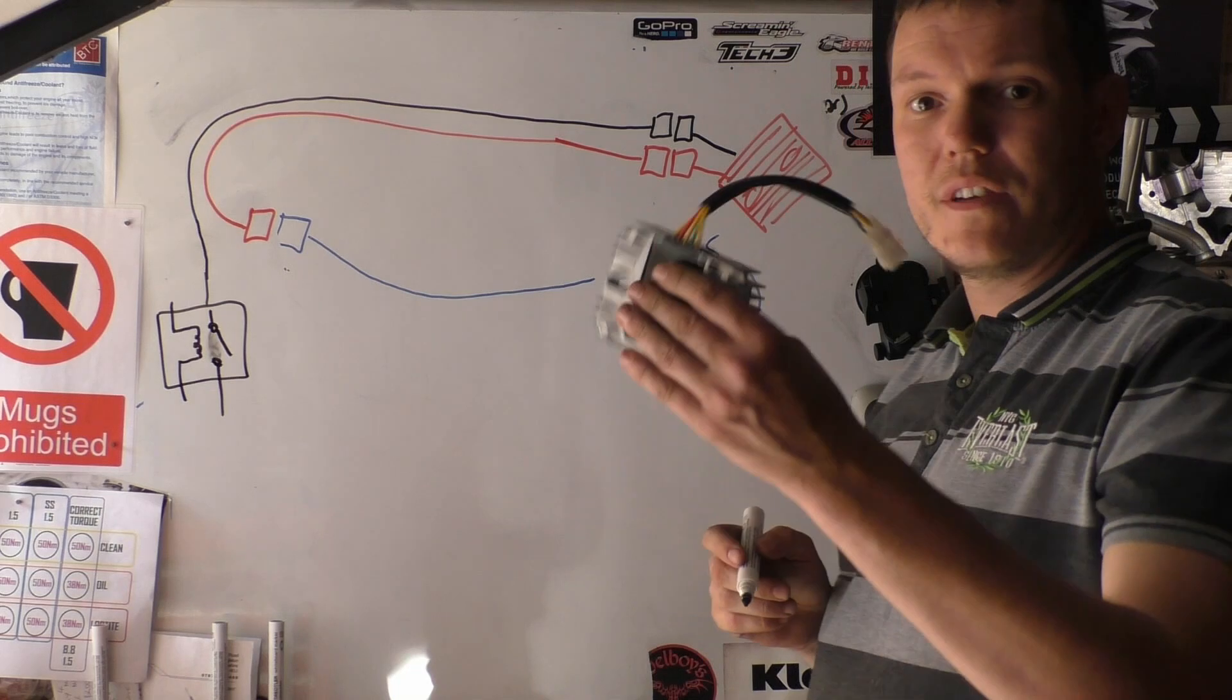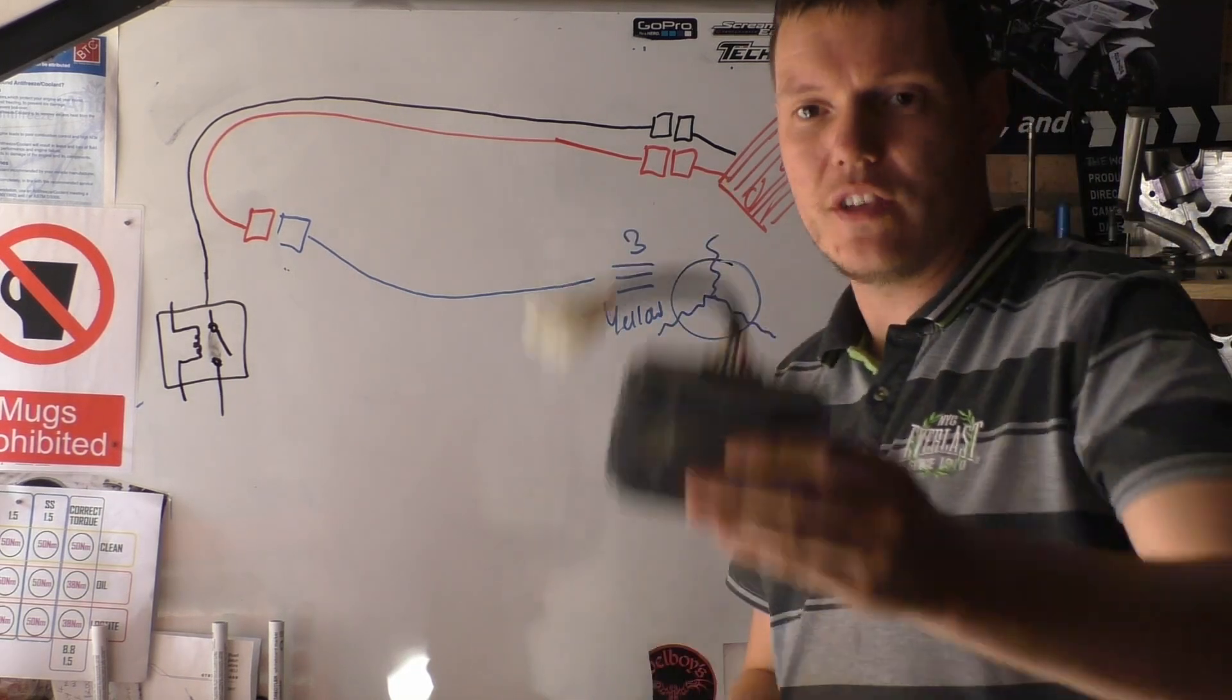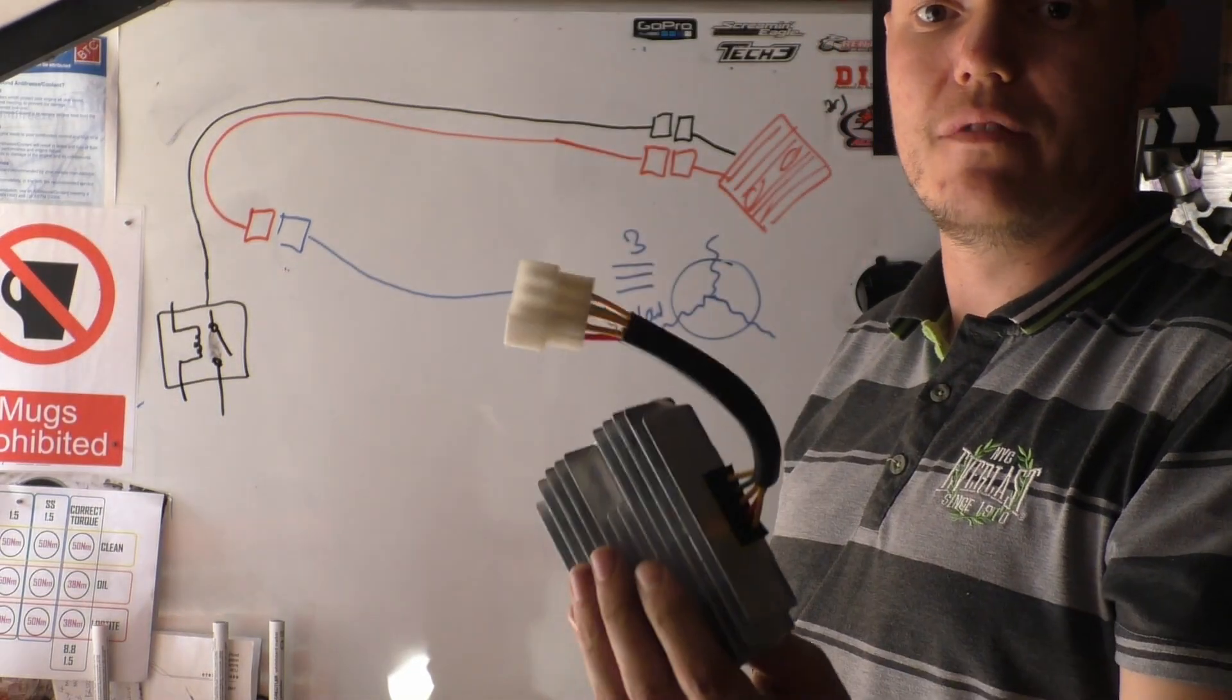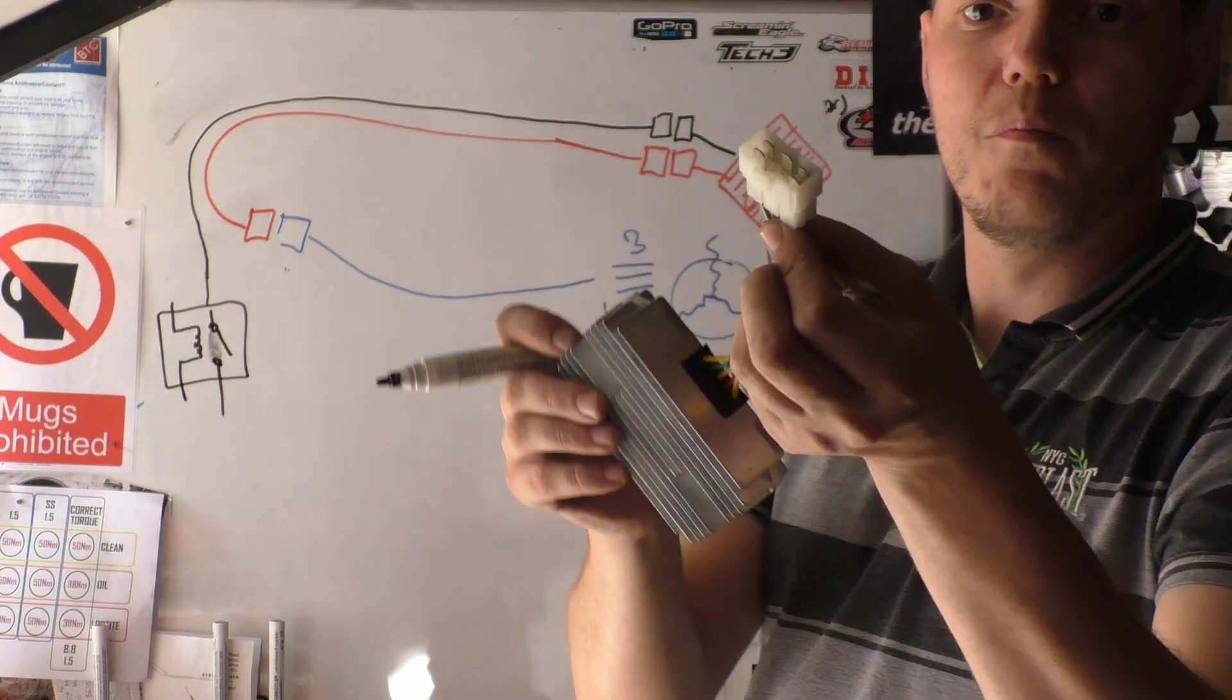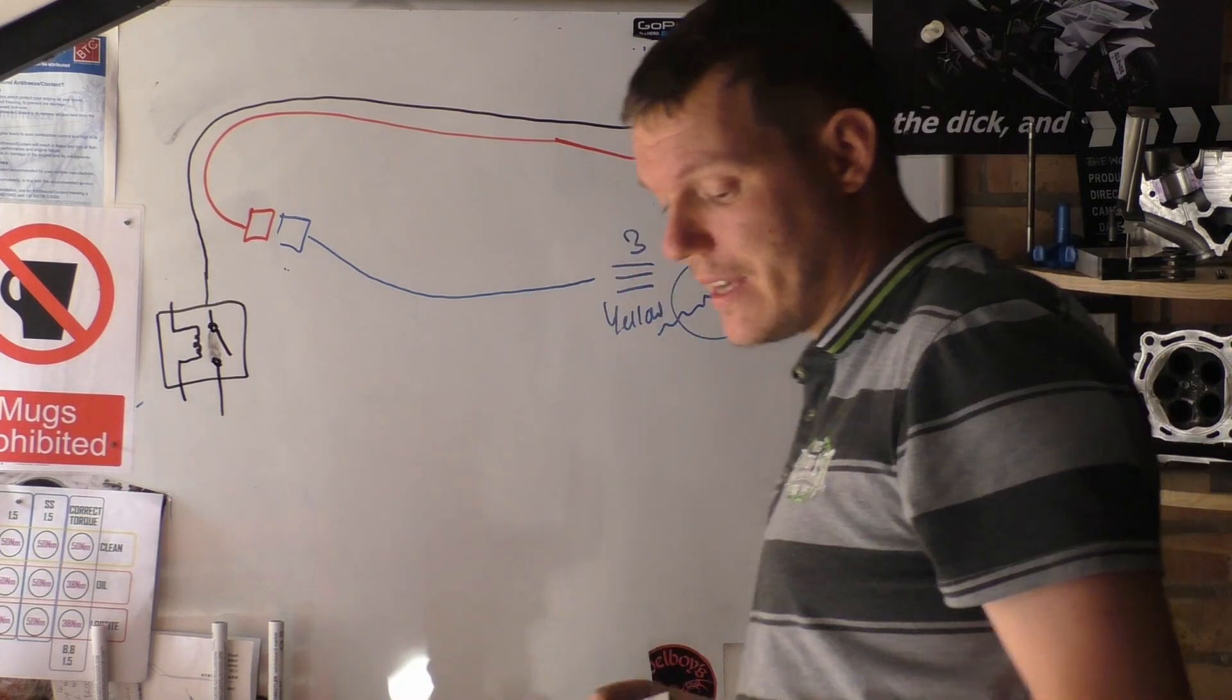So, what we have is we have this, which is our MOSFET jobby. And just like the original, it has all these five wires coming out of it. However, it's all in one block, it's not in two separate connectors.